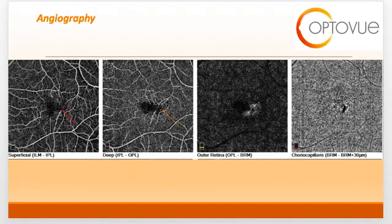Over time, these abnormalities will extend anterior to the superficial capillary plexus, where you can see the changes again in the parafoveal temporal part of the scan with the red arrow. Over time, these changes in the inner retinal plexi — the superficial and deep — can extend to the outer retinal space and form a subretinal anastomosis. You can begin to see in the outer retinal space here a hyperreflective area, which indicates that there is a beginning of some subretinal involvement.